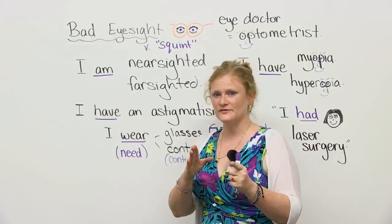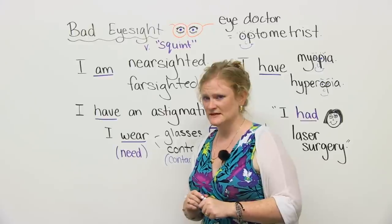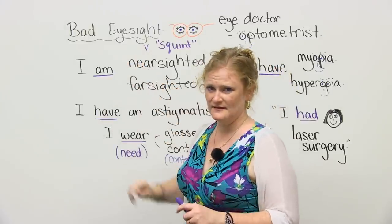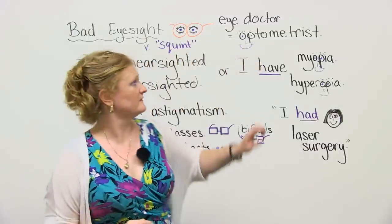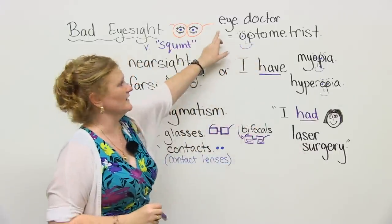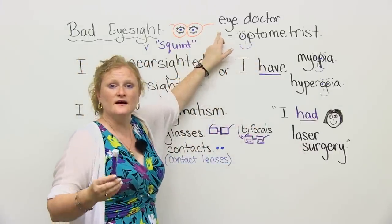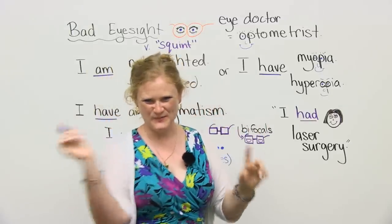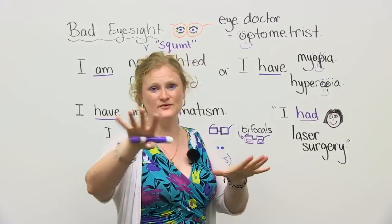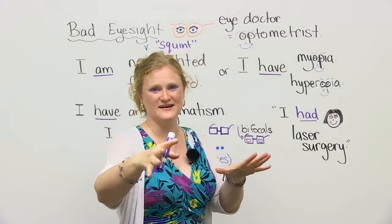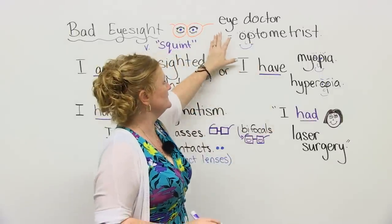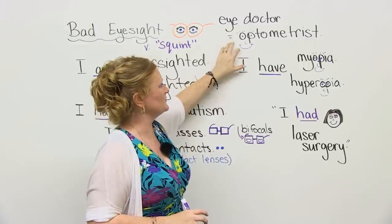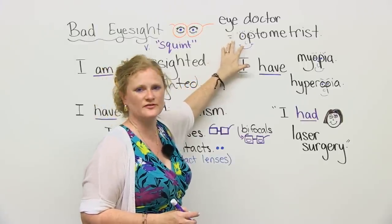If this has happened to you, you might be a victim of bad eyesight. So you need to go to an eye doctor. Now, a lot of doctors like to use bigger words to make it more difficult for you. So in doctor words, an eye doctor's proper name is an optometrist.